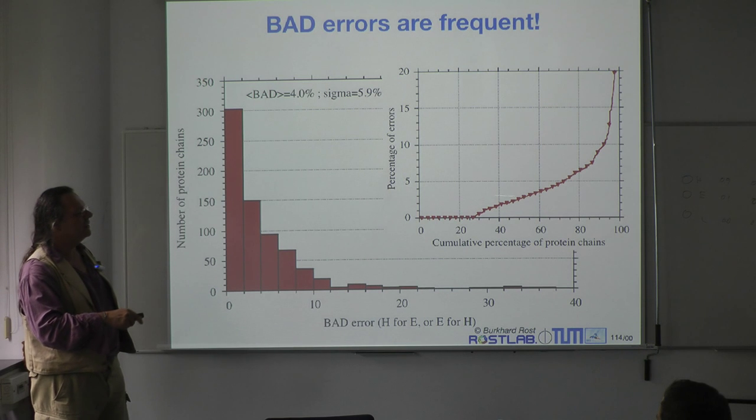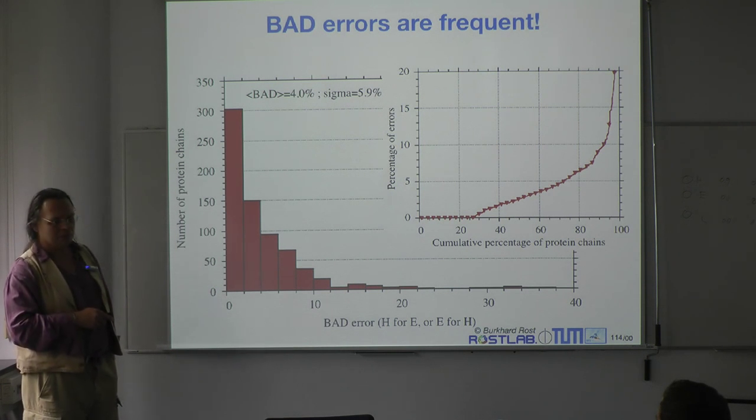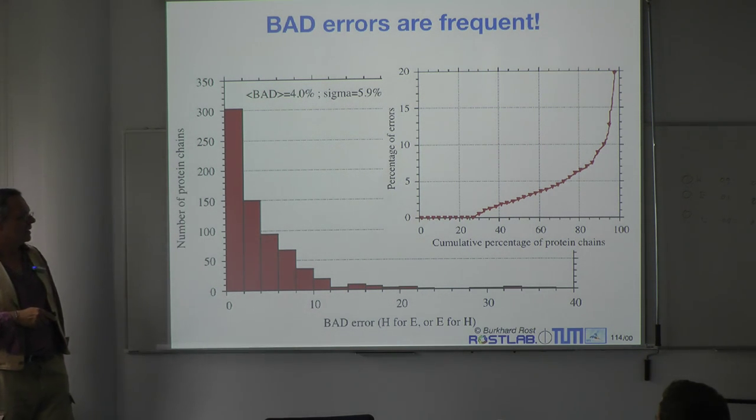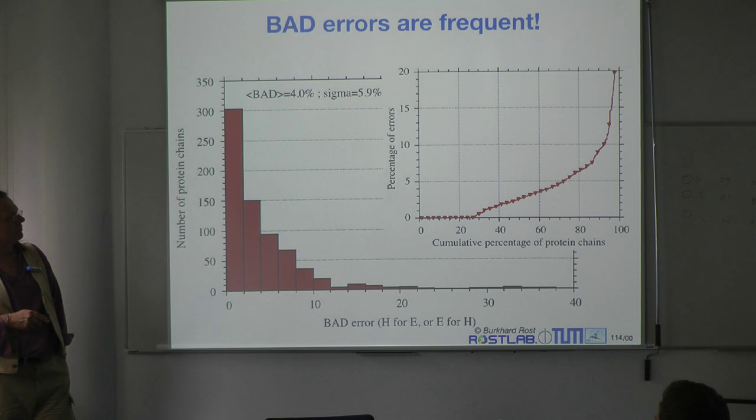The data shows that only 25% of all proteins have no bad mistakes, meaning no alpha–beta confusion. For about 10% of all proteins, 10% of the residues have the two states confused. That's remarkable — but again, the reliability method helps you to pick out those problematic cases.